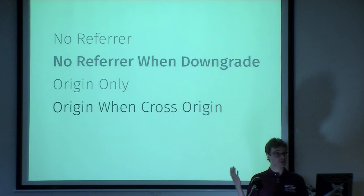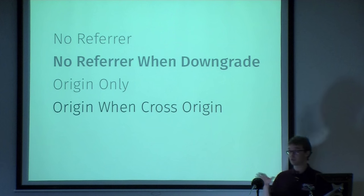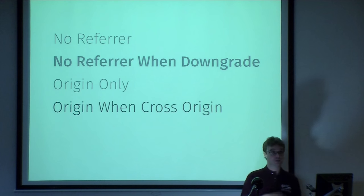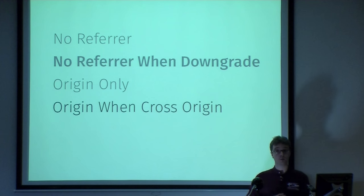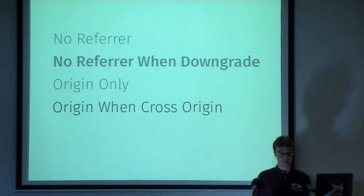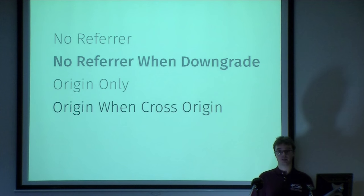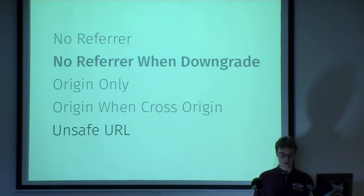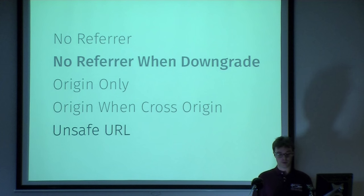'Origin when cross-origin' sends a full referrer all the time except when going from one origin to a different origin — then it strips down to just the origin. So for internal links you'll have the full referrer, but for external links that site will only receive the origin part. 'Unsafe URL' sends the full referrer all the time to everyone — please don't use that one.